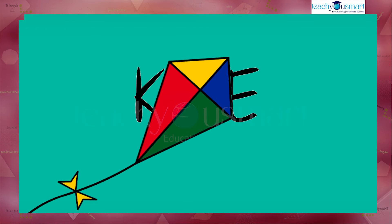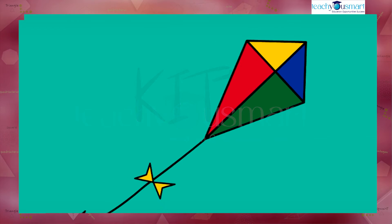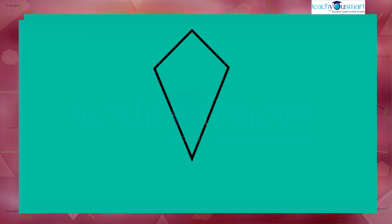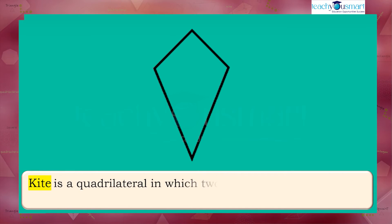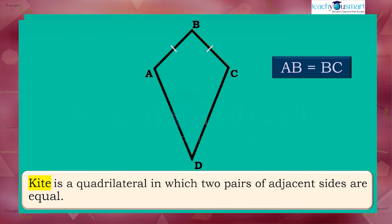Don't you think that the shape of a toy kite reminds us of a quadrilateral? So mathematically, a kite is a quadrilateral in which two pairs of adjacent sides are equal. Here ABCD is a kite with AB equal to BC and AD equal to DC.